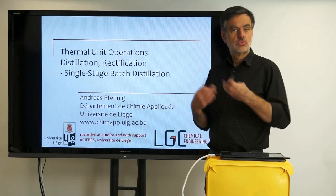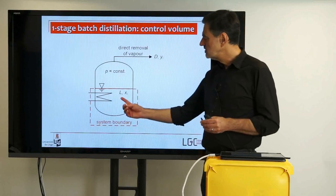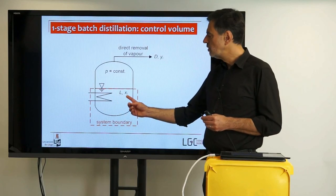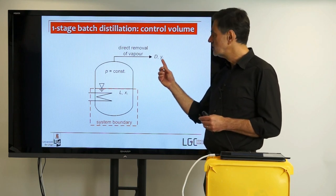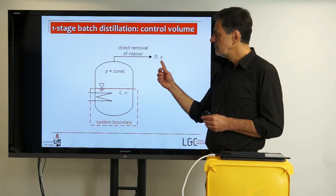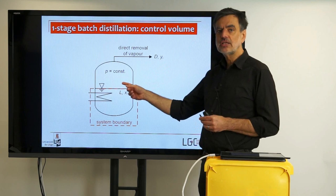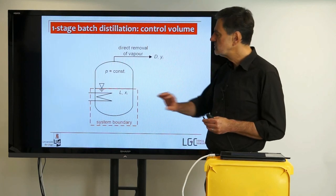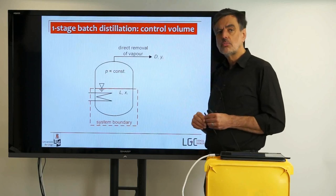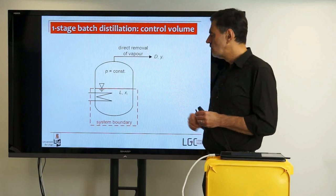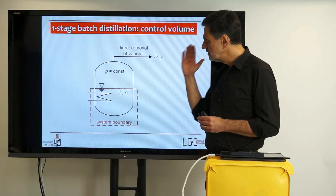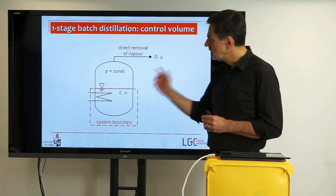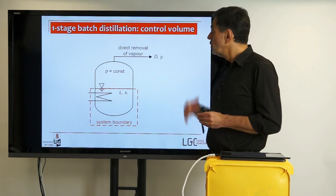Before we do that, I should recall the nomenclature we are using. We have been using L for the amount of substance in the liquid, and Xi is the mole fraction of component i. D is the amount of substance of the distillate, and Yi is the mole fraction of the distillate. This Yi is the mole fraction produced directly at the interface, and we assume there is no significant vapor volume, so Yi is the composition directly removed from the reboiler. The pressure is constant and the system boundary, or control volume, is shown in orange in the diagram.